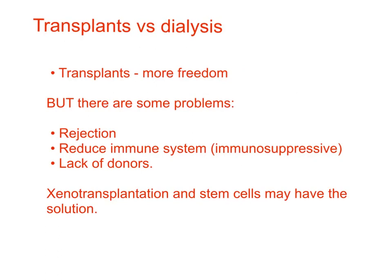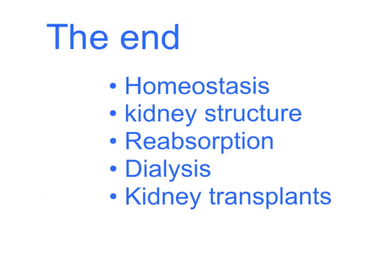And that is it. To quickly summarise what we've spoken about today: we've reiterated homeostasis and what aspects of the body need to be kept constant. We've looked at the structure of the kidneys. We've explained what is meant by reabsorption and the way that useful substances are reabsorbed back into the blood before it leaves the kidney. We've also looked at how dialysis machines work and we've looked at kidney transplants as an alternative. Thank you for watching — any questions, send them through. Next time we'll look at the other two aspects of homeostasis: how the body controls its temperature and how blood sugar level is kept constant.